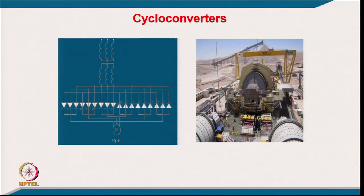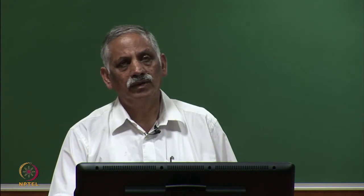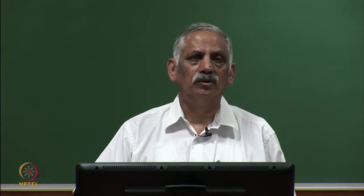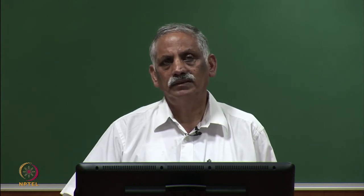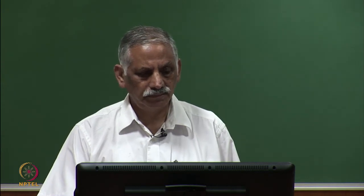Plasma power supplies also use solid-state control, requiring very high current pulses of very short duration. Converting AC to DC and drawing these high-power short pulses causes power quality problems. HVDC transmission similarly requires double solid-state conversion — AC to DC at the generating end and DC back to AC at the receiving end — using thyristor converters that generate harmonics and require reactive power.